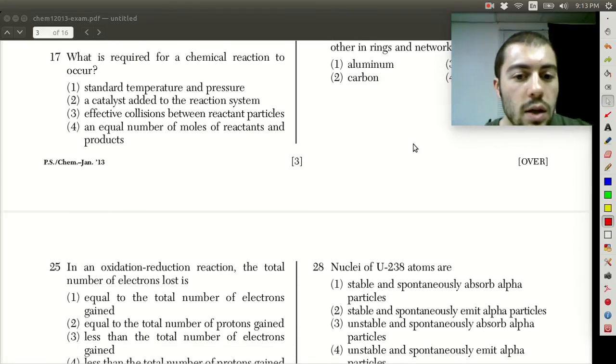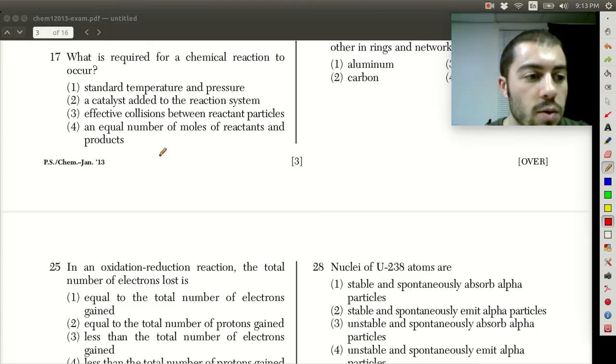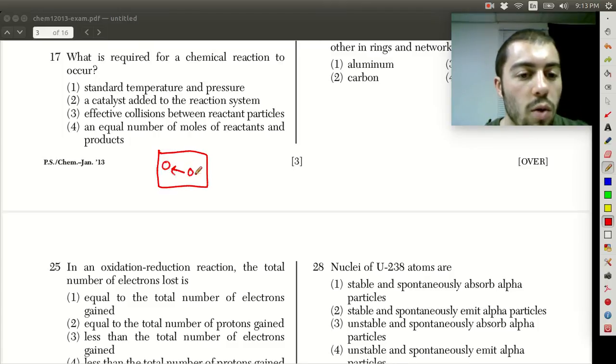For number 17, this has to do with collision theory. We talked about how if we want elements to react with each other, we need the molecules to collide with proper orientation and energy. This is what we describe as effective collisions. So effective collisions between reactant particles - the answer choice here is going to be 3.